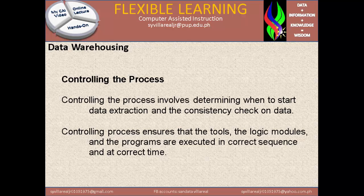Controlling the process. Controlling the process involves determining when to start data extraction and the consistency check on data. Controlling the process also ensures that the tools, the logic modules, and the programs are executed in correct sequence and at the correct time. It is very hard to control the process because it is handled by the computer — we can check for it, but we cannot fully control it. So this talks about when you need to extract the data.